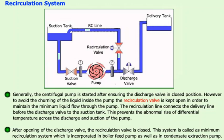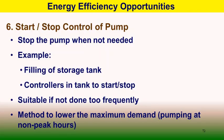Another method to reduce energy consumption is to reduce flow rate by starting and stopping the pump whenever necessary, provided this does not happen too frequently — a 6.6 kV motor cannot be immediately restarted after tripping or stopping. This option is applied when filling a storage tank at a constant flow rate, or where level controllers are installed for minimum and maximum level to automatically start and stop the pump.